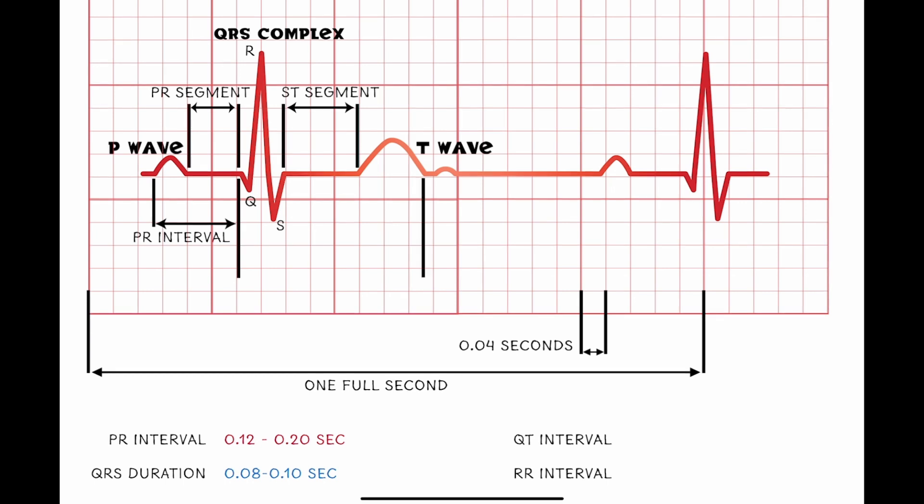And the QT interval is going to be the start of that ventricular contraction from the AV node sending the impulse down. And then at the end, it's that repolarization or reset while it gets ready for the next beat. And we like to see this QT interval between 0.32 and 0.43 seconds.